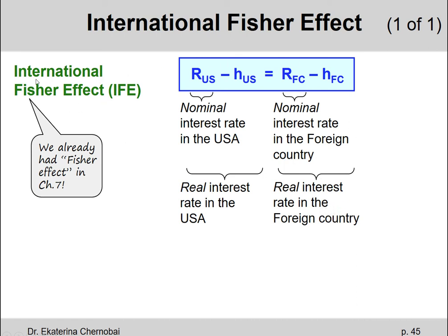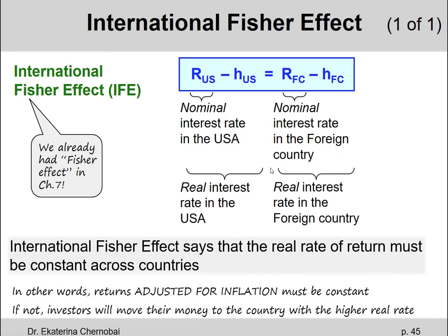So what does the International Fisher Effect formula imply? What does it say? It says that the real interest rate in the U.S.A. equals the real interest rate in some foreign country. The International Fisher Effect says that the real rate of return must be constant across countries.